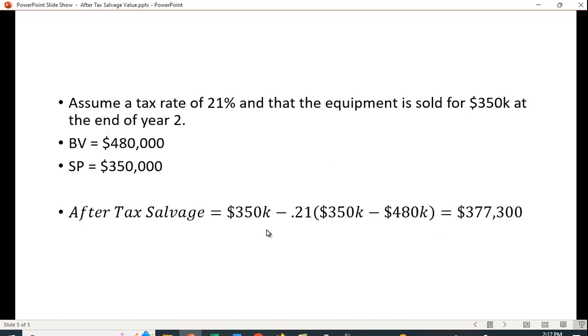You can see that it's really quite easy to compute, but you need to put in this step. You can't just say they sold it for $350,000, therefore their cash flow in that final period is $350,000.